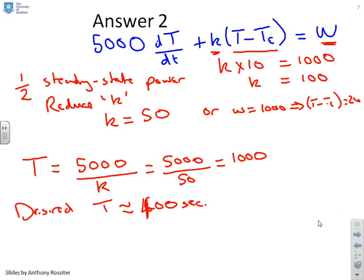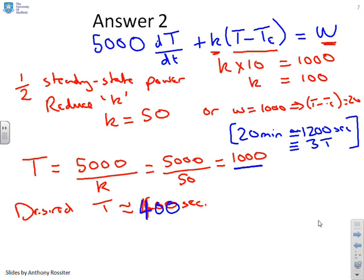Let's just put this over here in a different colour so we don't make it wrong. So 20 minutes is going to be 1200 seconds which is equivalent to 3T. That was our objective. We wanted it to get to within 5% of target after 20 minutes which basically means 3 times the time period. So our desired time period is 400 seconds. And what we found is our actual time period is 1000 seconds.